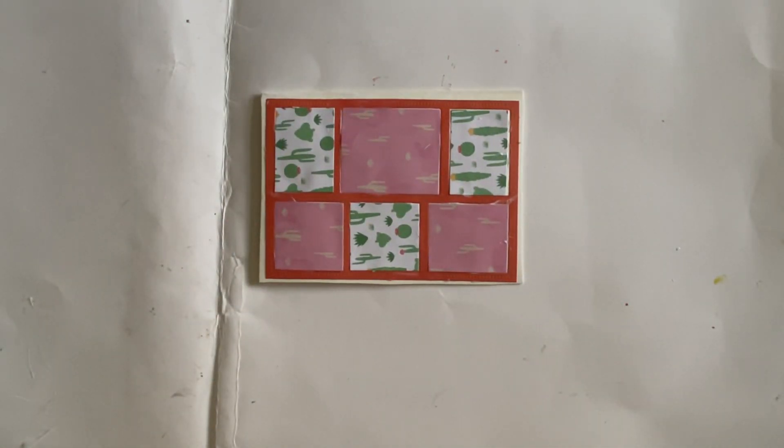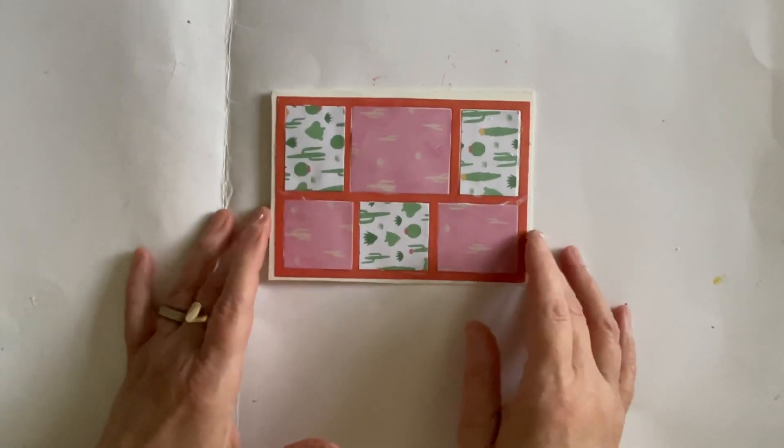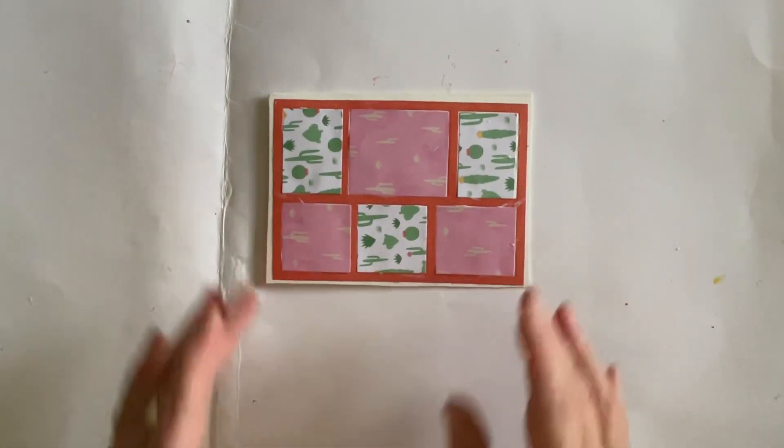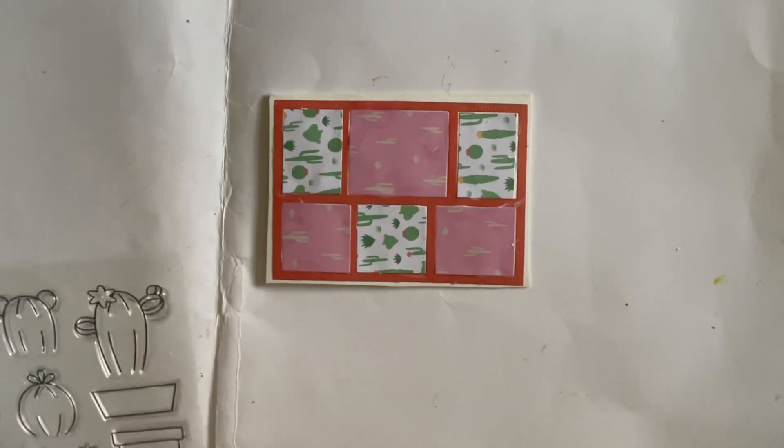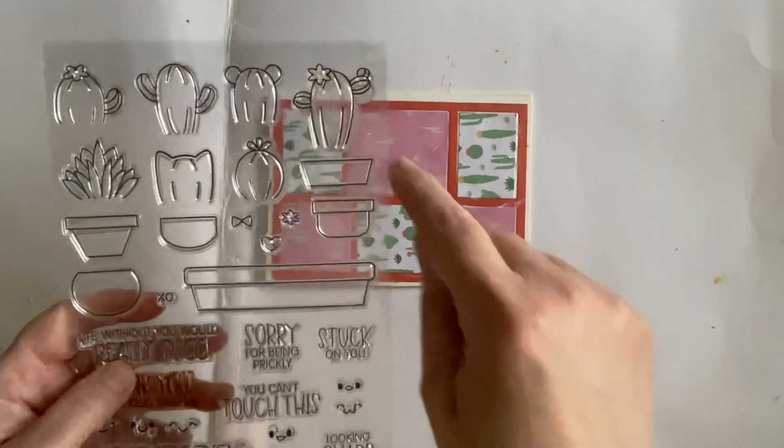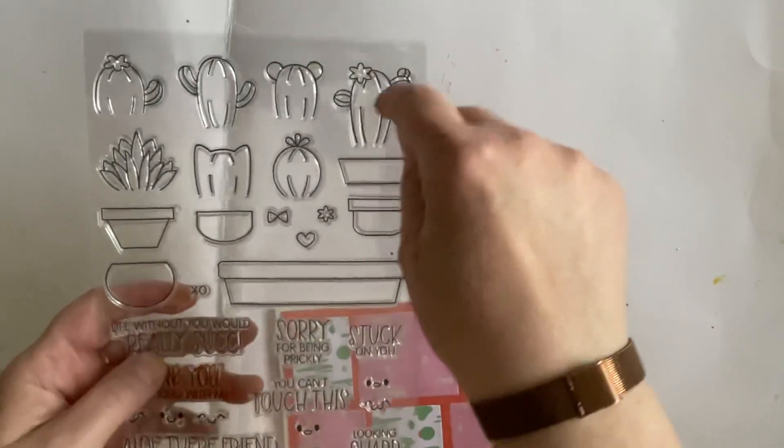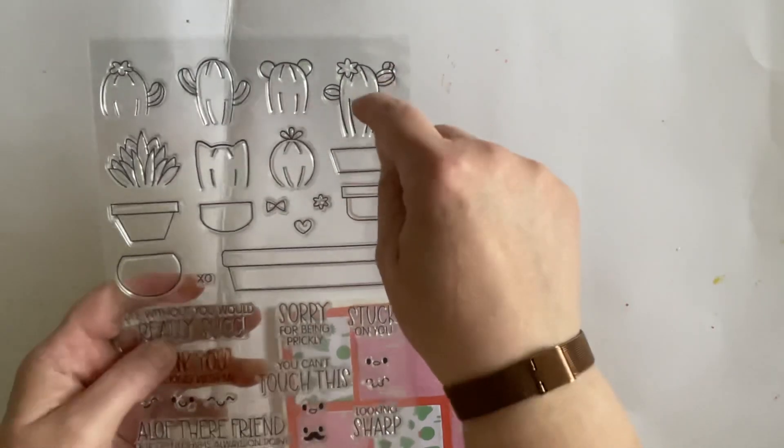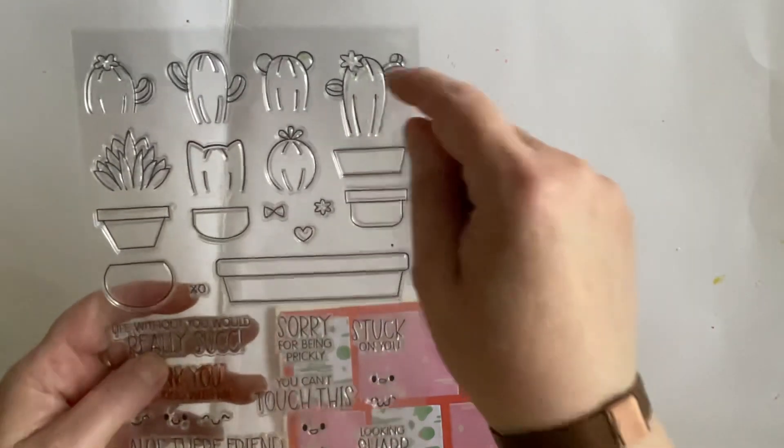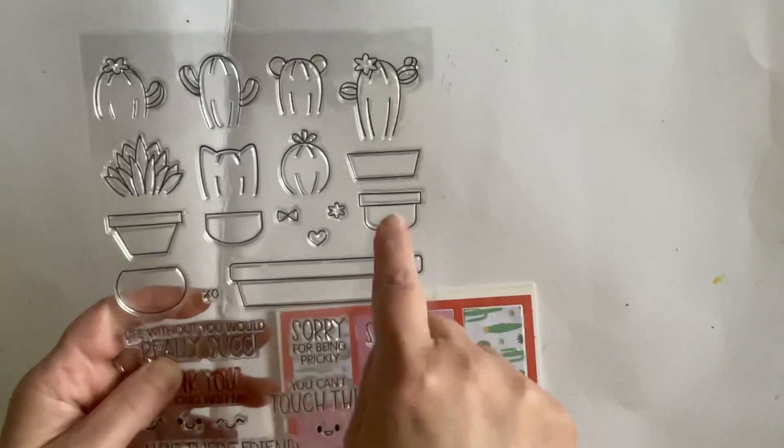There we go, there is our background all done in just under four minutes. I have used the image stamps, I've used this little one here. I haven't used the face this time, I might do in another one, but I've used the cactus as it is and I've used this little pot down here.